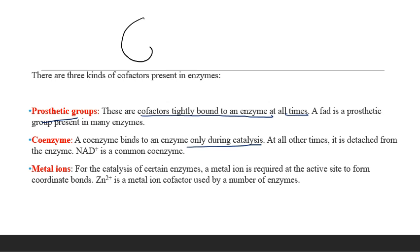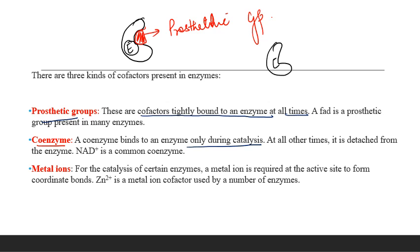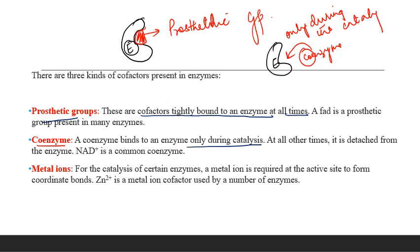If this is an enzyme, the prosthetic group remains tightly attached to it at all times. In the case of a coenzyme, the enzyme remains separated from the coenzyme but it gets attached only during the catalysis reaction.